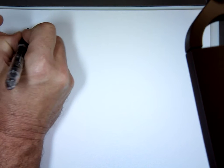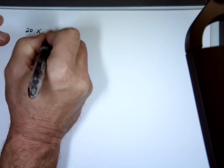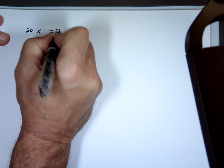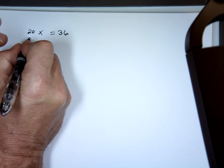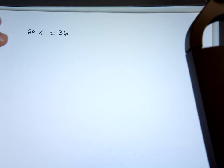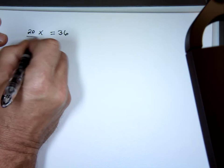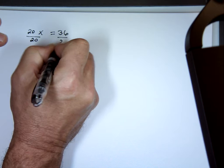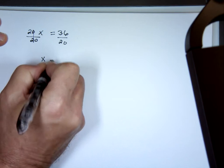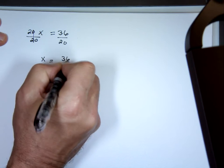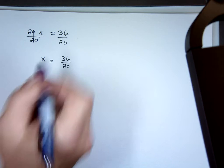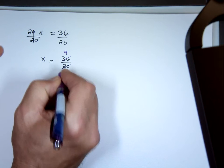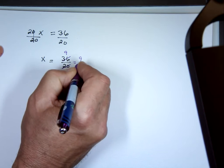If I have 20x equals 36, x will be what? You divide both sides by 20. So x equals 36 over 20. Can I simplify that? I can divide them both by 4. By 4, this is 9. By 4, this is 5. 9 over 5.